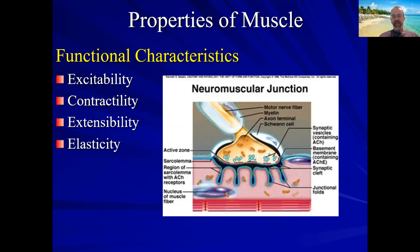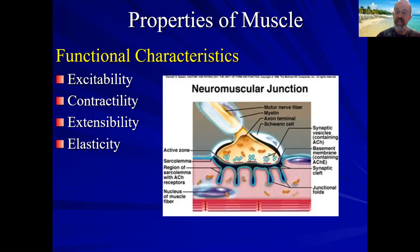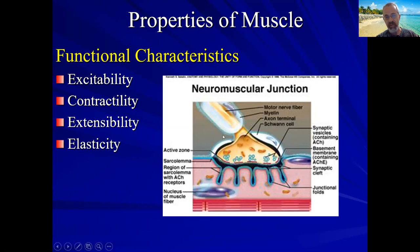Muscle is also elastic, meaning that once it's stretched it goes back to its original size, and once it shortens it goes back to its original size. This is an example of a neuromuscular junction, and of course nerves control the function of skeletal muscle — we'll take a look at how they do it shortly.